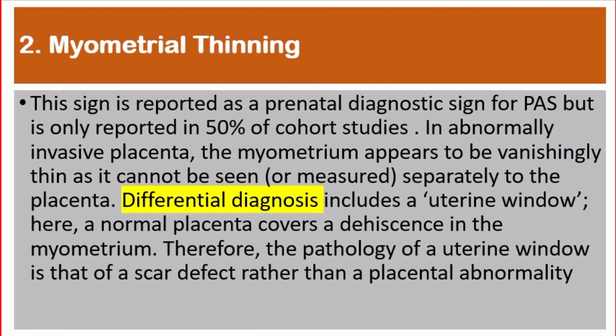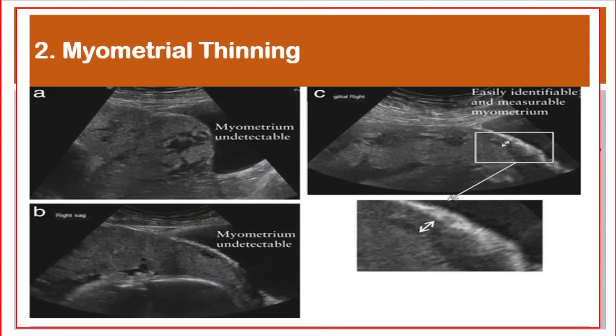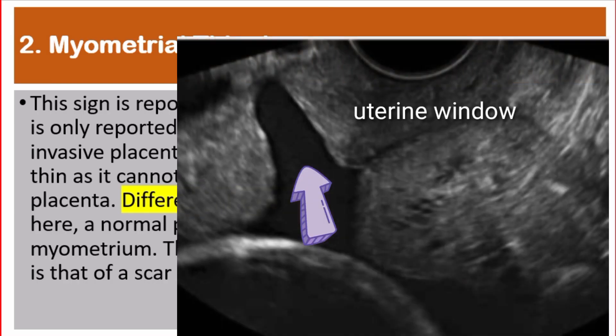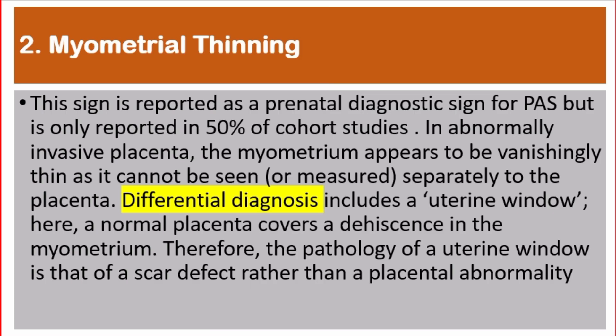Number 2: Myometrial thinning. This sign is reported as a prenatal diagnostic sign for placenta accreta spectrum, but is only reported in 50% of cohort studies. In abnormally invasive placenta, the myometrium appears to be vanishingly thin, as it cannot be seen or measured separately from the placenta. The differential diagnosis includes a uterine window, where a normal placenta covers a dehiscence in the myometrium. Therefore, the pathology of a uterine window is that of a scar defect rather than a placental abnormality.